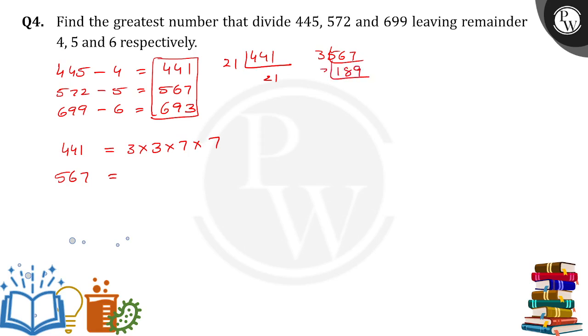Again, divide by 3 to get 63. Again, divide by 3 to get 21. Divide by 3 to get 7. So we write it as 3 into 3 into 3 into 3 into 7, right?